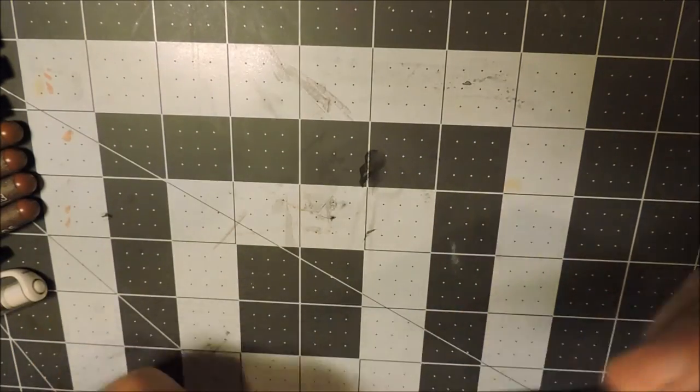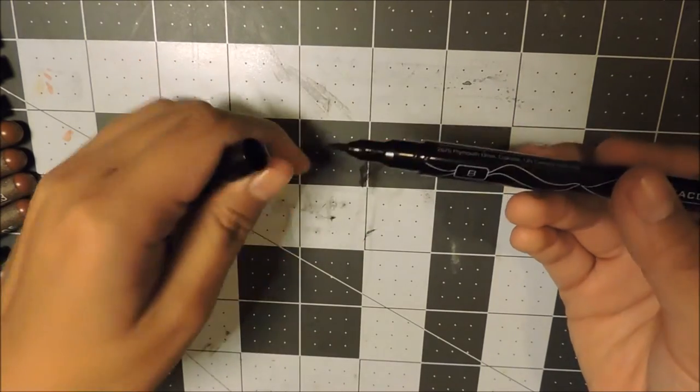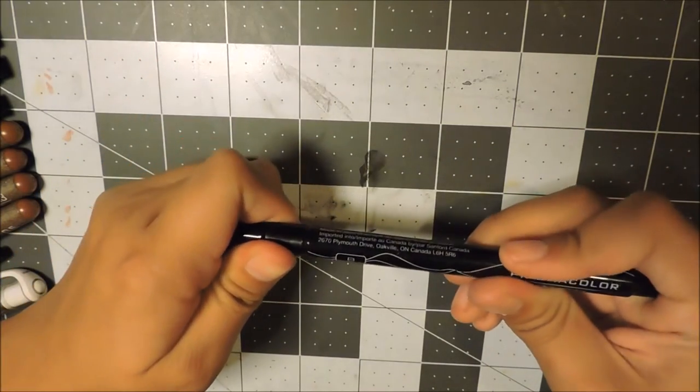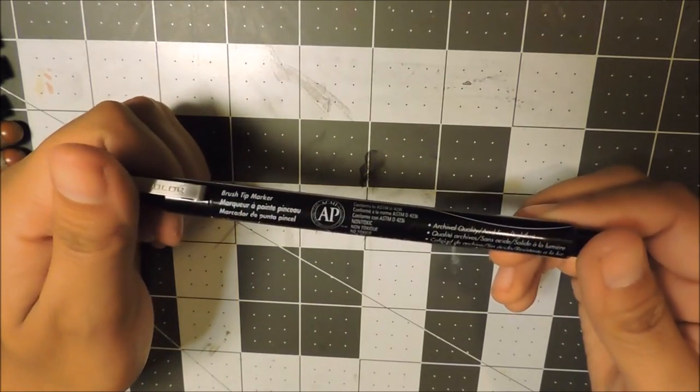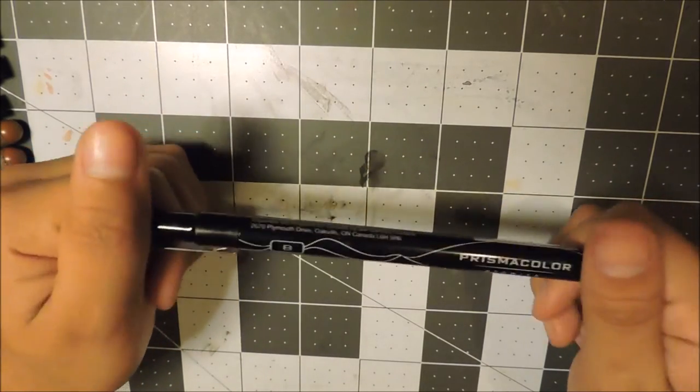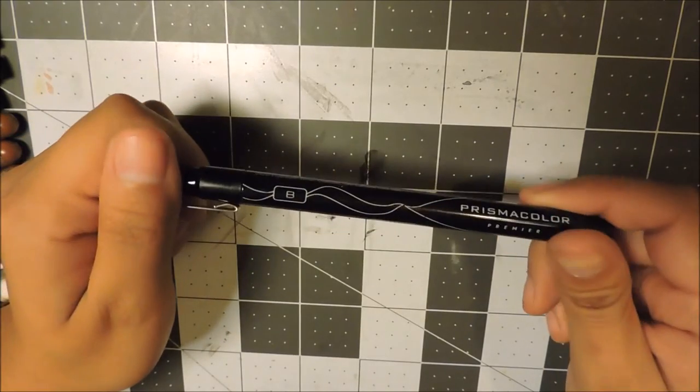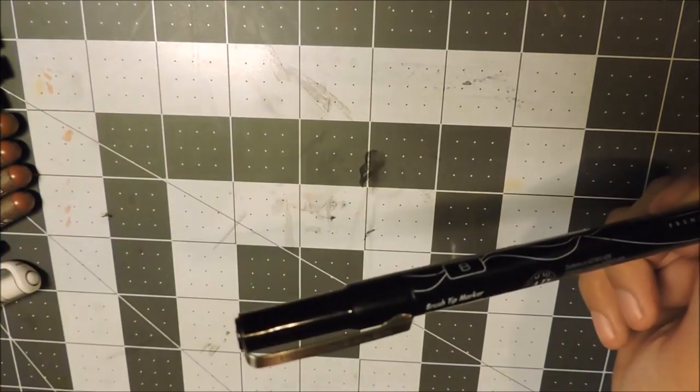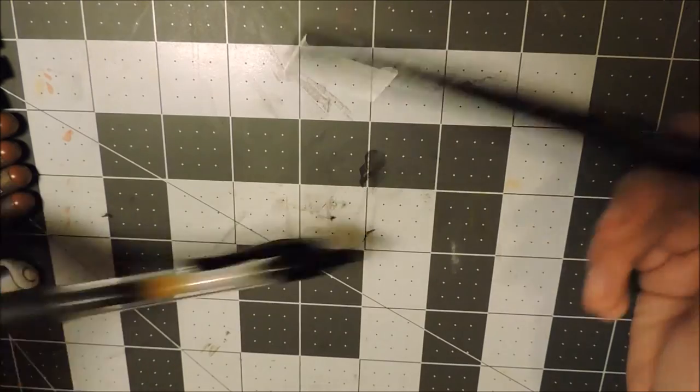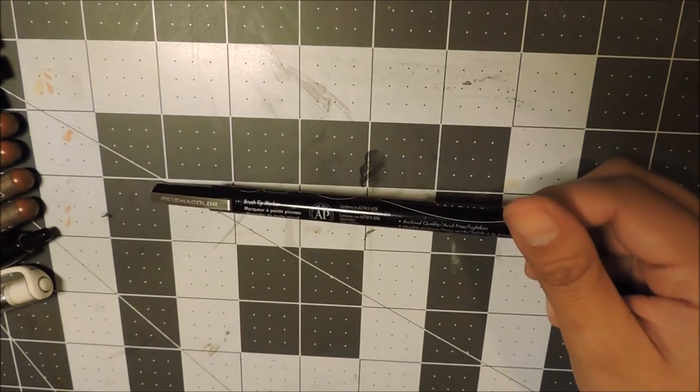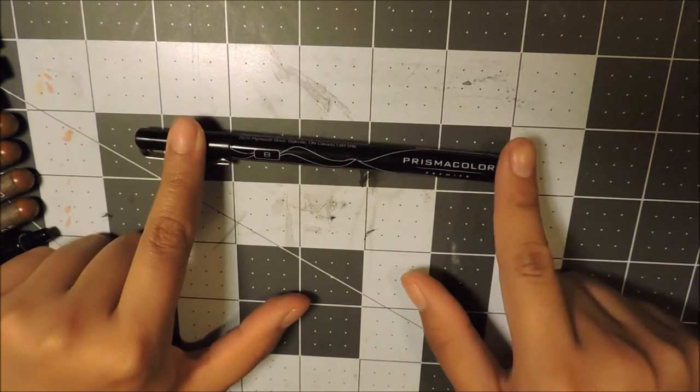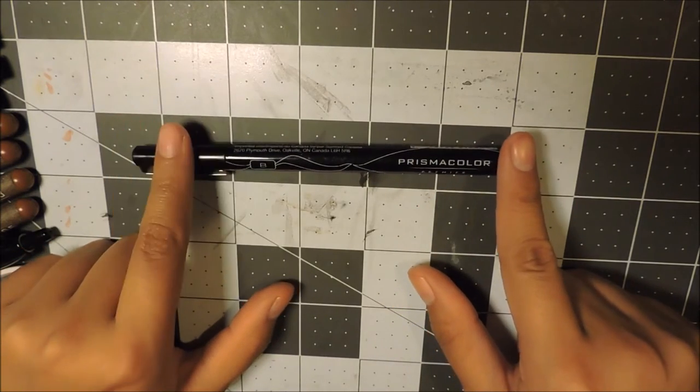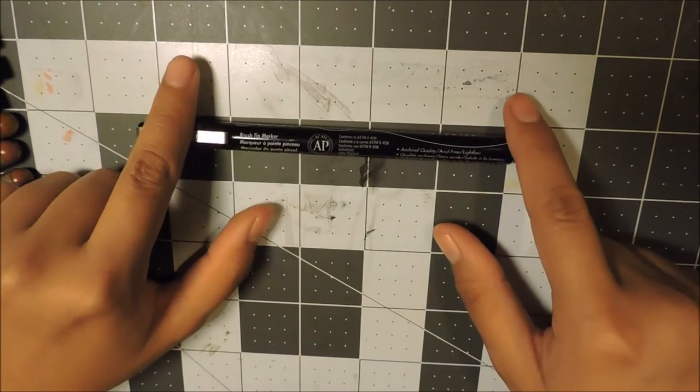Here I have the Prismacolor brush pen or brush tip marker. It's just a felt tip marker. This one is actually not waterproof so I don't really tend to use this with watercolors.